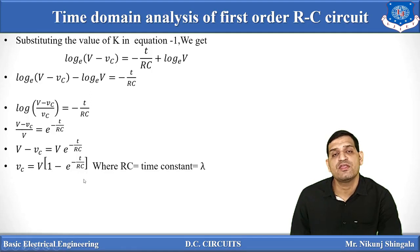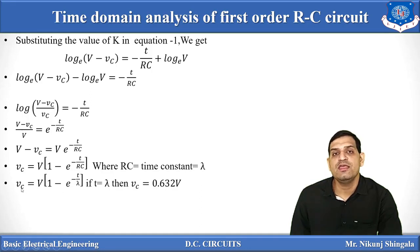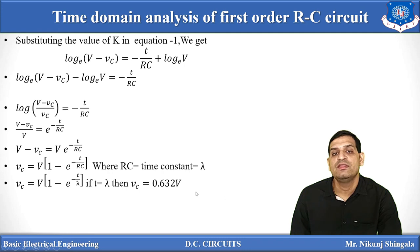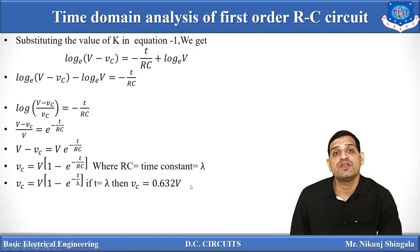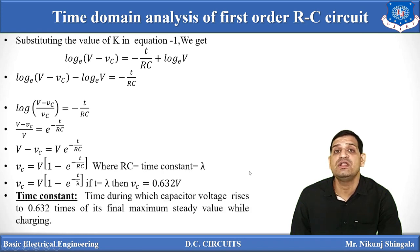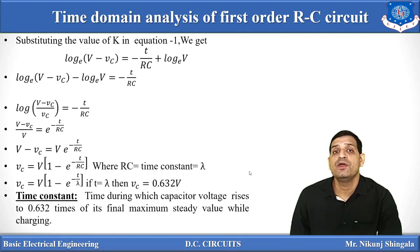Now we can define RC — the product of resistance and capacitance — as the time constant, denoted by lambda (λ). So we write VC equals V times (1 minus e raised to minus t/λ). If we put t equal to lambda in this equation, we get VC equal to 0.632V. So at time t equals lambda, the capacitor voltage reaches 63.2% of its maximum value. We define the time constant as the time during which the capacitor voltage rises to 63.2% of its final steady state value during the charging process.